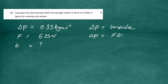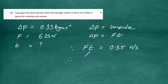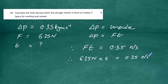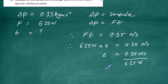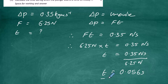We convert units and write the equation: F × t = 0.35 newton seconds. Substituting the force: 6.25 newtons × t = 0.35 newton seconds. Dividing both sides by 6.25 newtons, the newton units cancel, and we get time t = 0.35 ÷ 6.25 = 0.056 seconds. So the time of contact the plunger made with the trolley is 0.056 seconds.